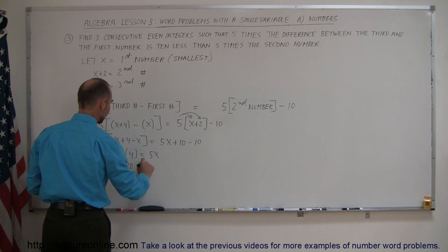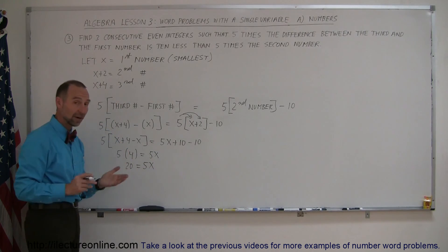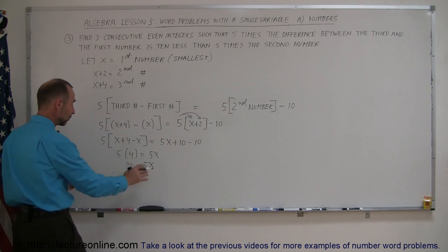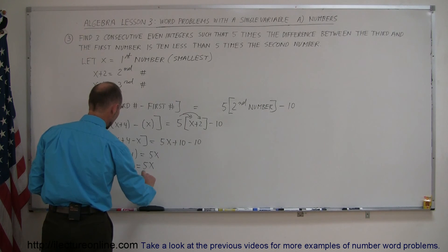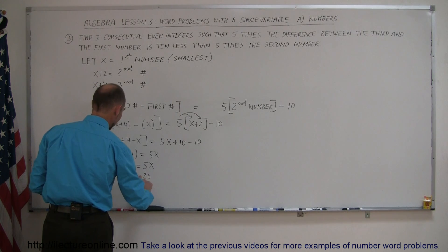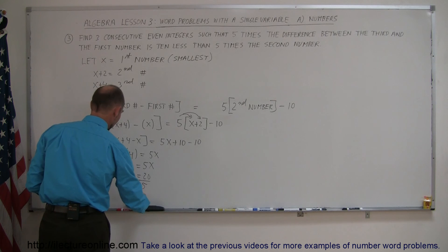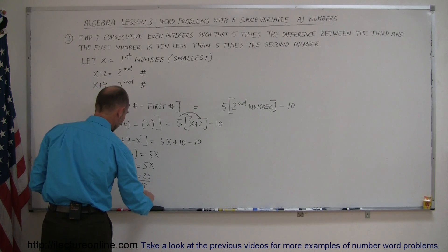Now since I'm solving for x, I'm going to turn the equation around, move the 5x over here and the 20 over there. So we have 5x equals 20. And now we divide both sides by the coefficient. And so we have x is equal to 20 divided by 5, which is 4.